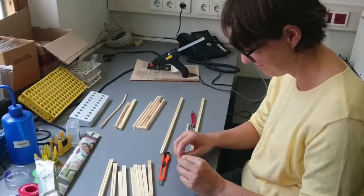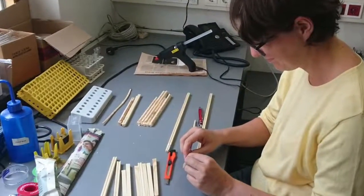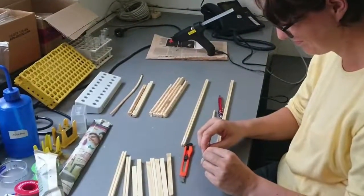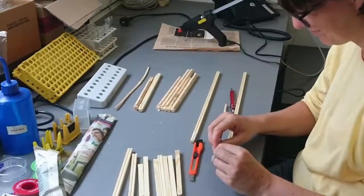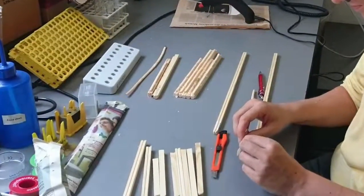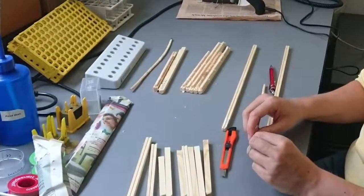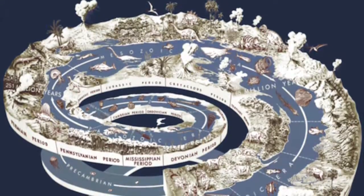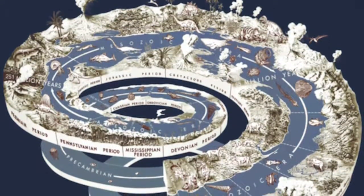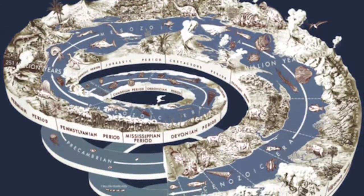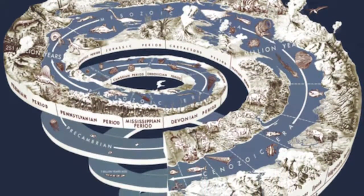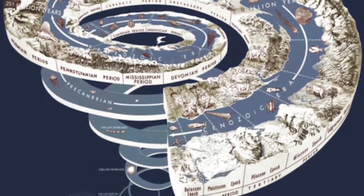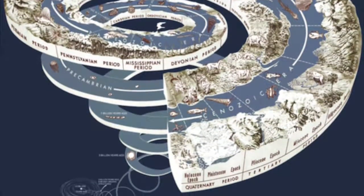After all the rings have been interpreted, samples are compared with each other, previously taken samples, other proxy records, and direct records for the area. Based on this data, dendrochronologists then come to a conclusion as to what the climate was like in the past for a certain area.